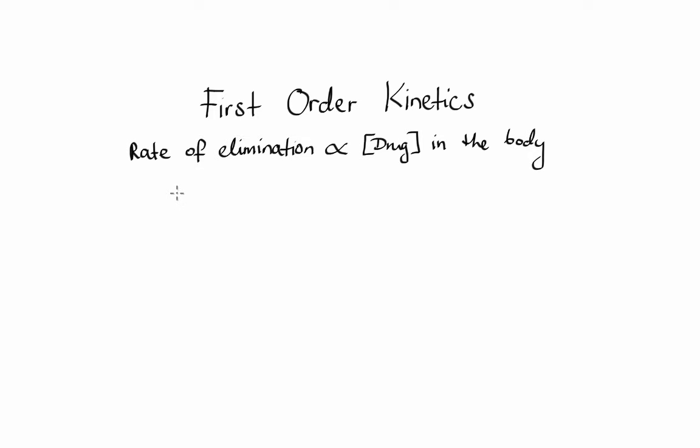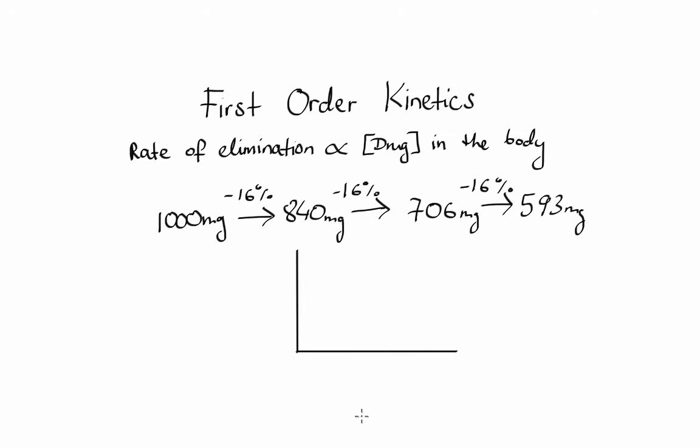Most drugs are eliminated by first order kinetics, which means that the amount of drug eliminated over time is directly proportional to the concentration of drug in the body. What this means is that, for example, starting with 1000mg of a drug, the amount eliminated per each time period will be different, but the fraction will be constant. In this example, per each time period, constant of 16% of drug gets eliminated, however, the milligram amount changes. If we were to collect these samples and plot them, the graph would produce a curve that looks something like this.